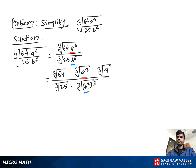64, which is 4, because 4×4×4 = 64. Cube root a³ is a times cube root a over cube root 25 times b². We can also write this as 4a over b² times cube root a over 25.